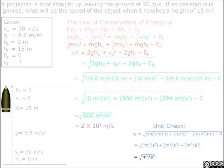So we come up with square root of meter squared over second squared, which leads us to meters over second, which is correct.